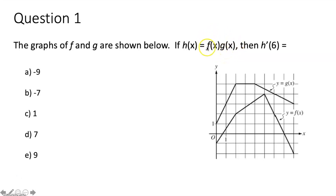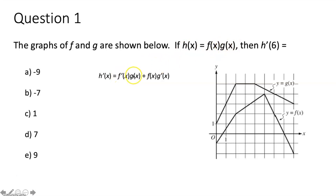When you take the derivative of a function times another function, you have to use the product rule. The product rule says if I want to take the derivative of h of x, it's going to be h prime of x equals the derivative of the first function f prime of x times the second function g of x, plus the first function f of x times the derivative of the second function g prime of x. We have successfully taken the derivative of h of x, and we then need to find h prime of six.